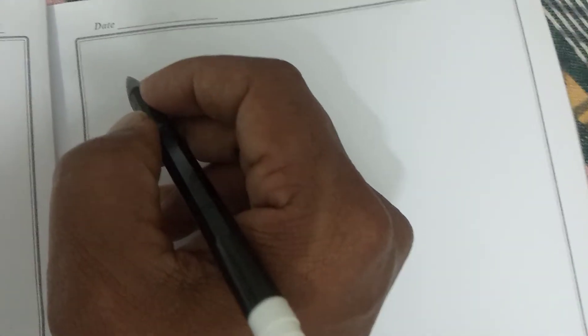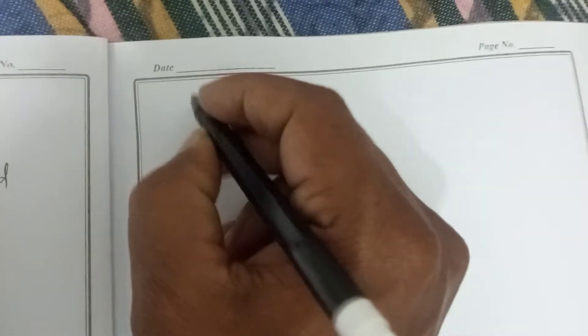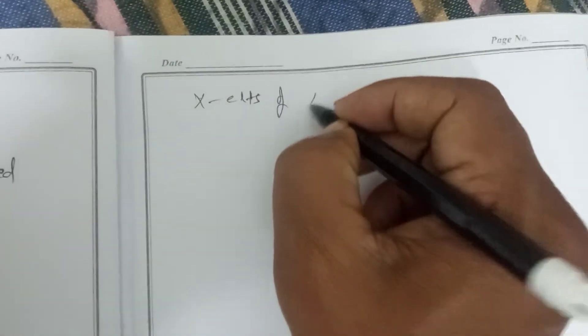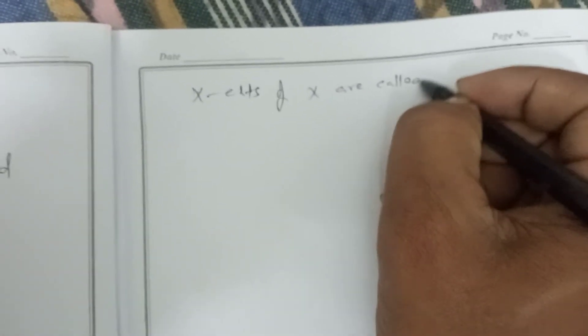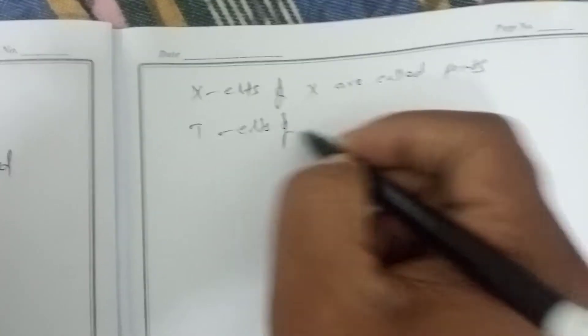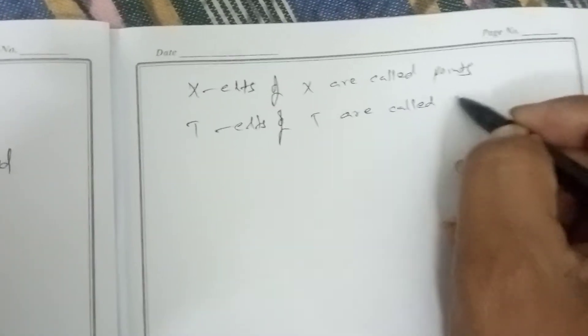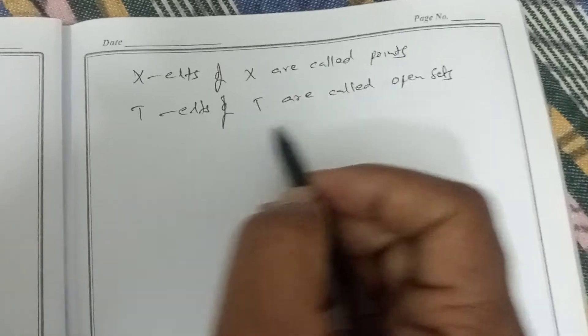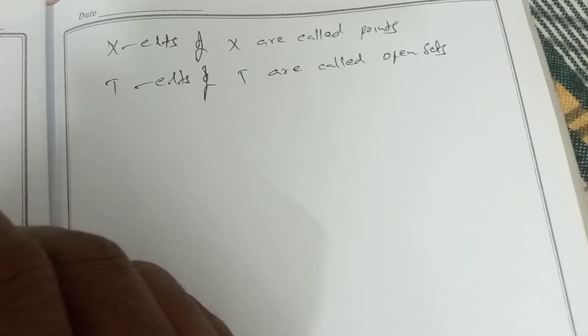Before going to examples, note the terminology: the elements of X are called points, and the elements of T are called open sets.